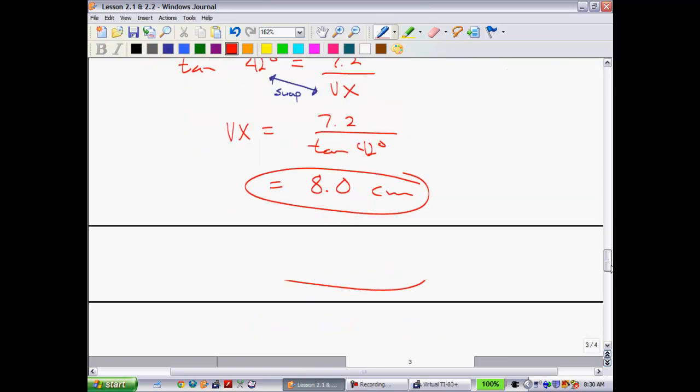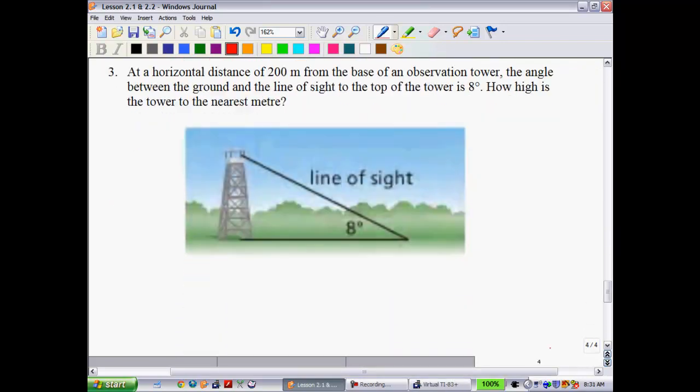Turn to our last page and we'll see what we got. At a horizontal distance of 200 meters from the base of an observation tower, the angle between the ground and the line of sight to the top of the tower is 8 degrees. How high is the tower to the nearest meter? This question really isn't any more difficult than any of the ones were on the previous pages. They give you a word problem, but they were nice enough to give you an example here with a diagram, so that's nice.